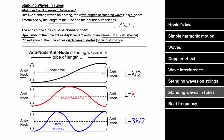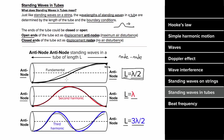If both ends of a tube are open, you have antinode-antinode standing waves. The largest wavelength standing wave goes from antinode to antinode, which is one-half of a wavelength, so the tube length equals half a wavelength. The next possibility is one whole wavelength, then three-halves. This is the same progression as node-node strings: whether both ends are antinodes or both are nodes, you get half a wavelength, one wavelength, three-halves, etc.